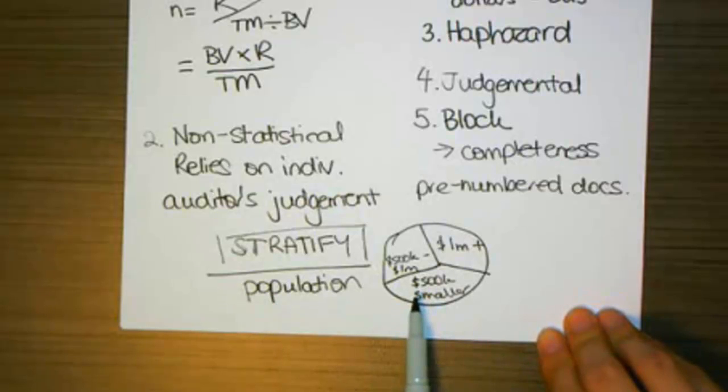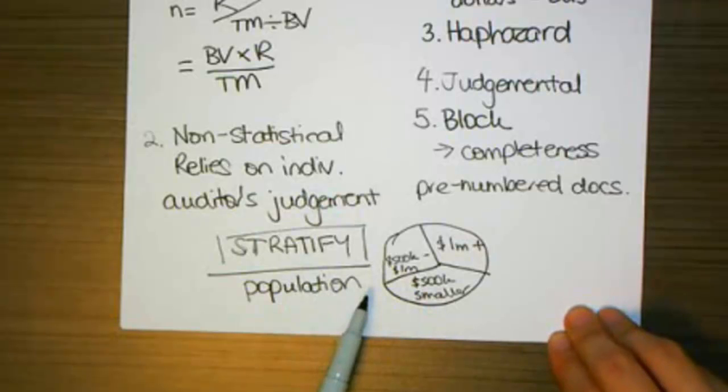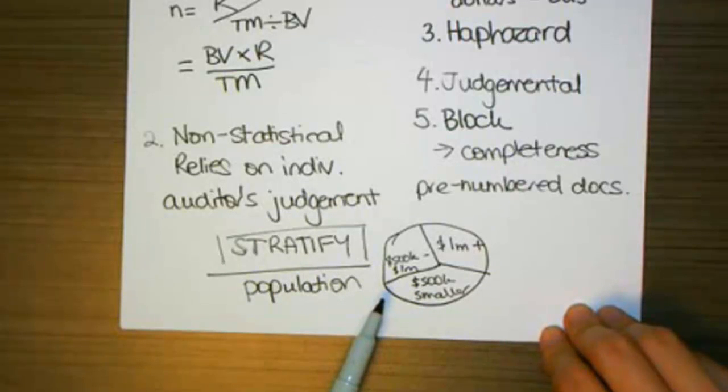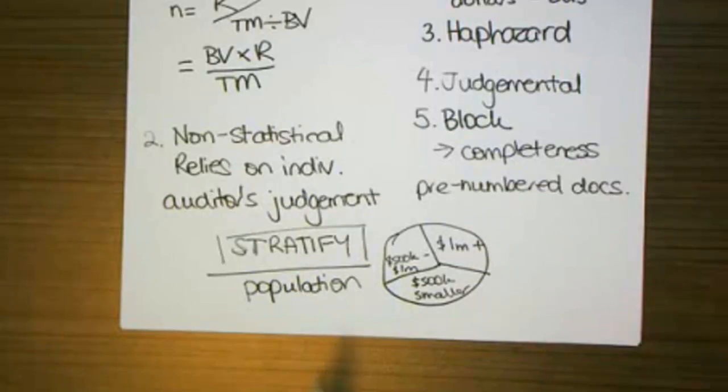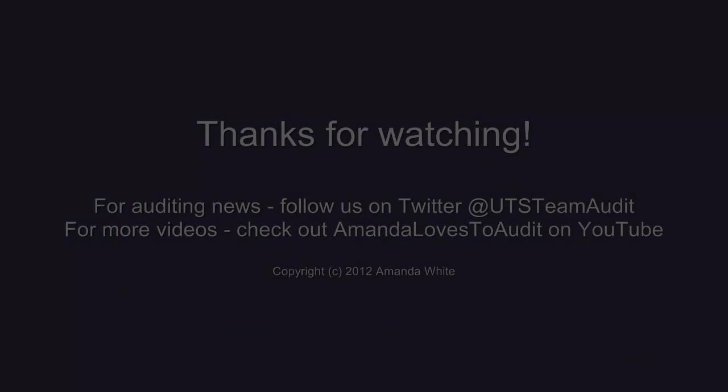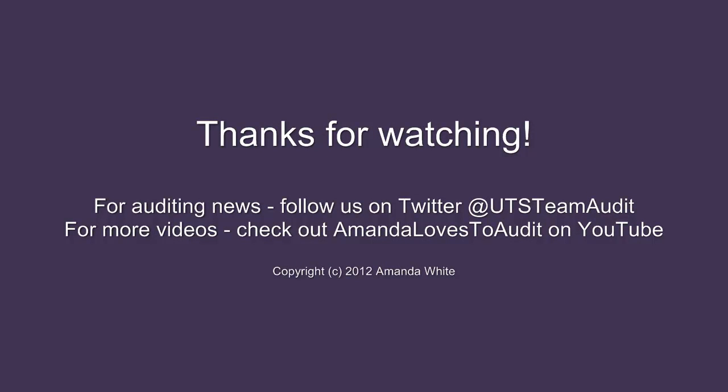Stratification can often be done on dollar amounts, but you could also break up populations even by geographical location. So if you're auditing inventory, you might break up that inventory by geographical location.